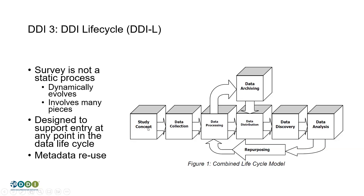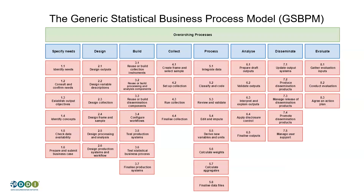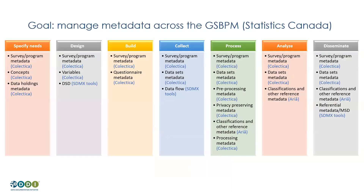You may be familiar with the Generic Statistical Business Process Model, which comes from the High Level Group on the Modernization of Official Statistics. It has these high-level functions and many sub-steps. Statistics Canada uses the GSBPM as a reference model for describing their own processes, and they use DDI Lifecycle tools — specifically a tool called Colectica, a DDI Lifecycle metadata repository. It's a commercial software, but it is natively DDI Lifecycle-driven. Everywhere Colectica is shown is a place where they're using DDI Lifecycle — at some stage in every single major business function in GSBPM.